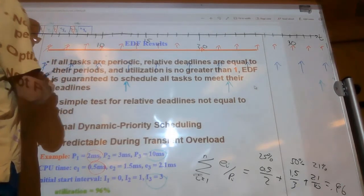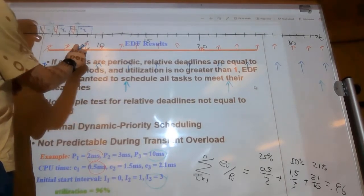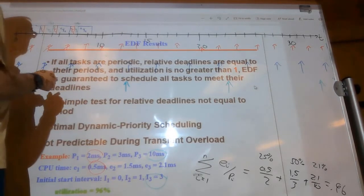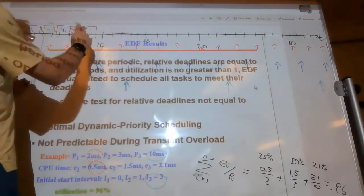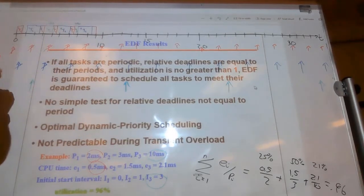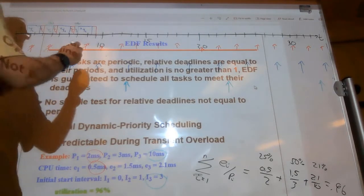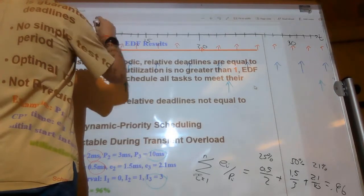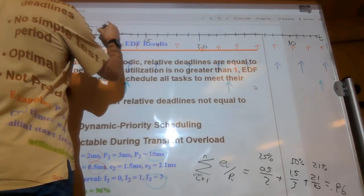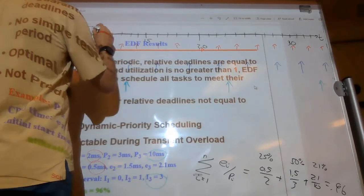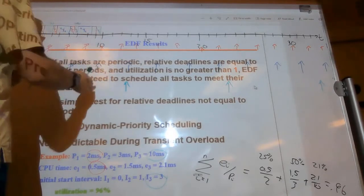Now we have two tasks remaining. One has a deadline here and the other has a deadline there — earliest deadline first means we run task one. It runs for half a millisecond and finishes. Now the only thing on the ready queue is the remaining portion of task three — six tenths of a millisecond. Task three runs those six tenths of a millisecond and task three instantiation one completes, finishing before anything else runs.